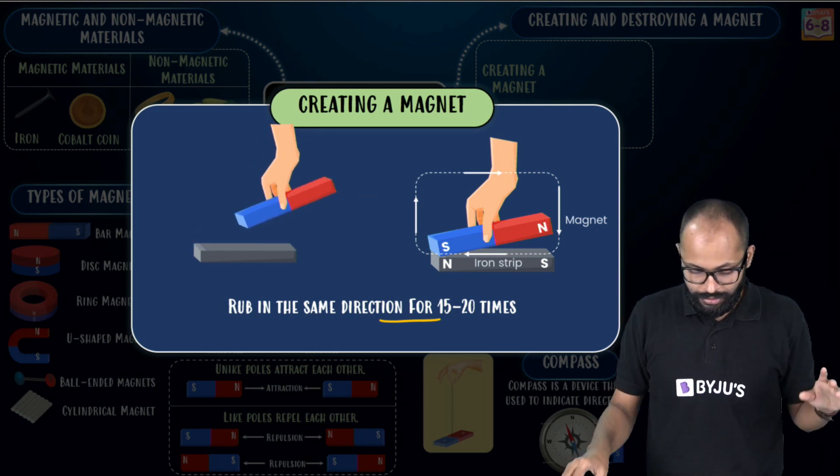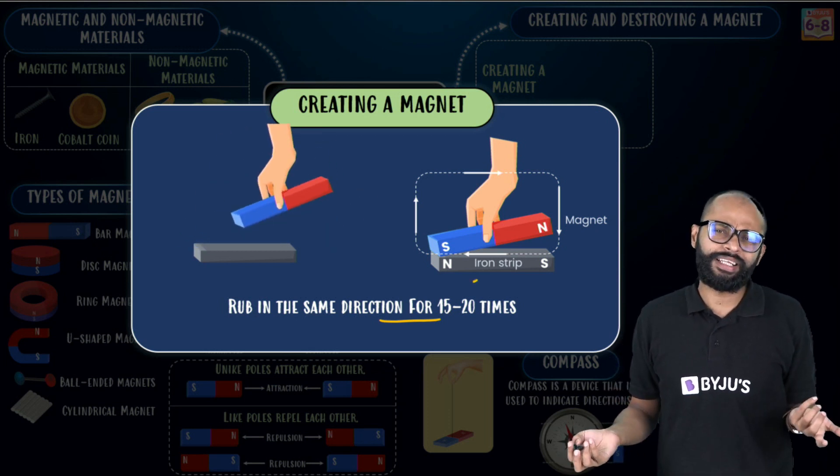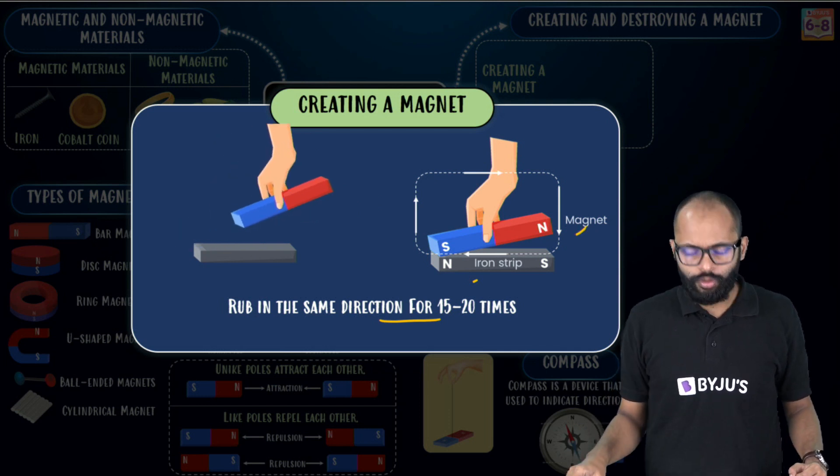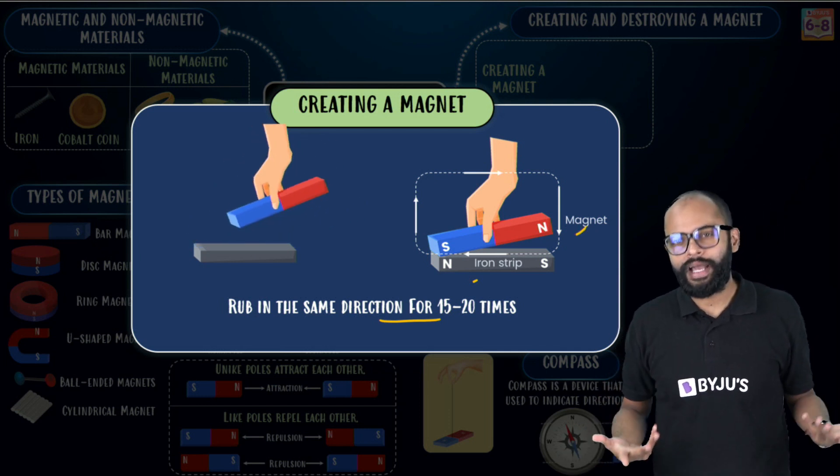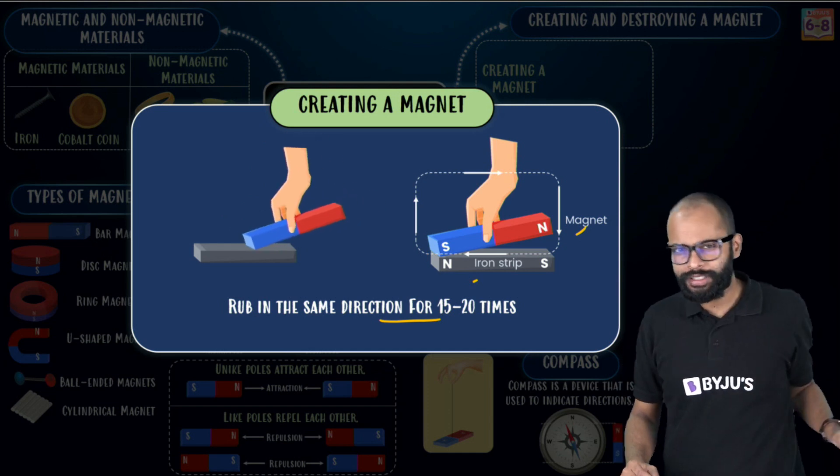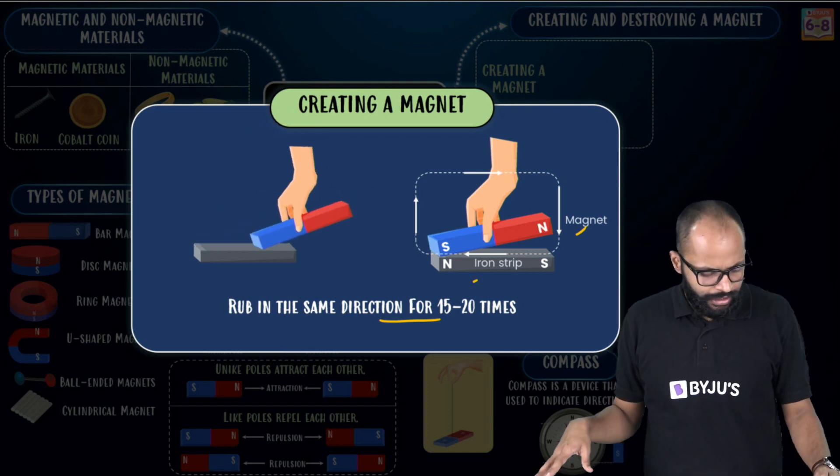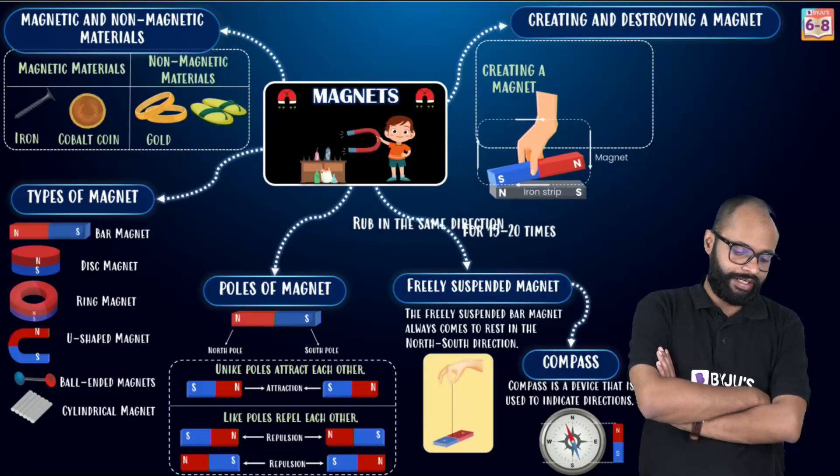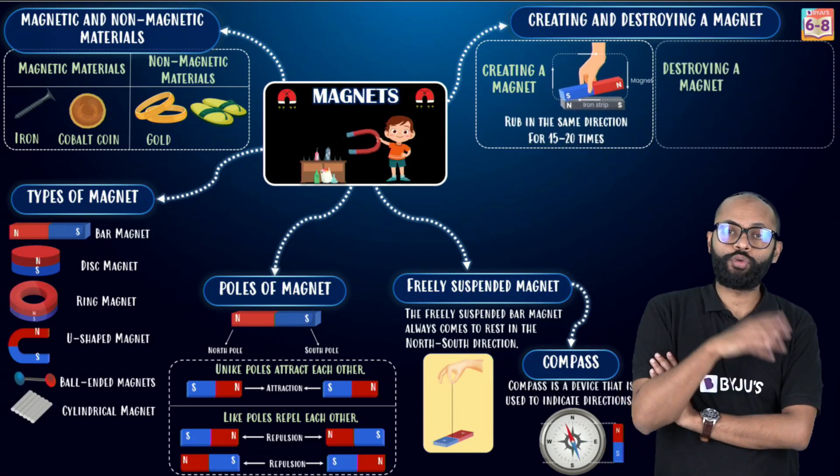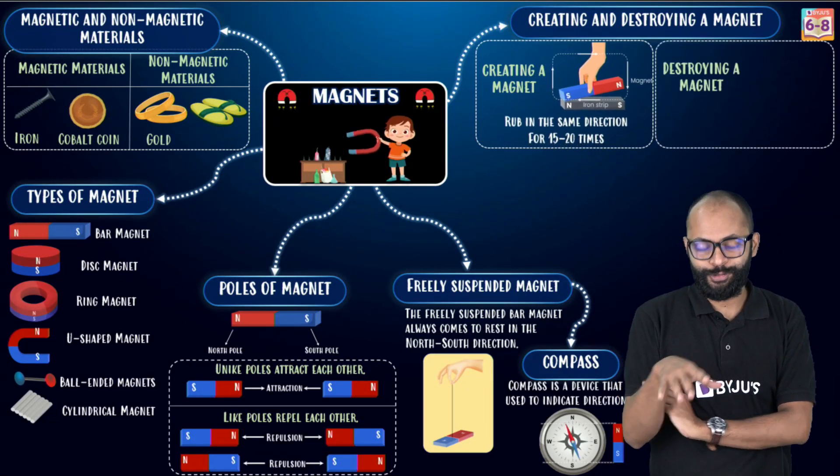So rub in the same direction for 15 to 20 minutes. Clear? Opposite pole will come to the other side. That's fine. And with iron strip. Okay? So you have to rub it. And that's how you can create a magnet. I would suggest for 4 to 5 minutes to rub it. You take a nail and it will work. Fine. That's how you create a magnet. And I told you two precautions also, right? Two disclaimers also.